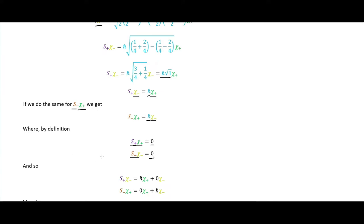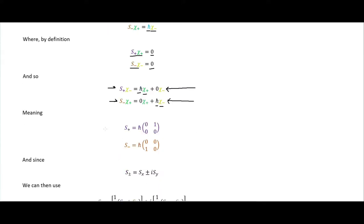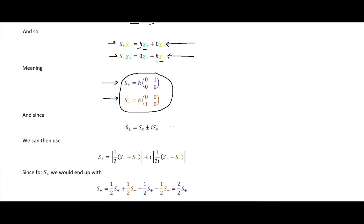Breaking these down into components times basis vectors, we get S-plus equal to the matrix (0, 1; 0, 0) times h-bar, and S-minus equal to the matrix (0, 0; 1, 0) times h-bar. These are the matrix representations of the raising and lowering operators.